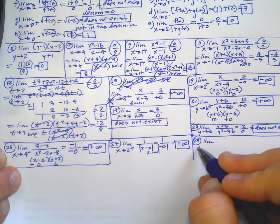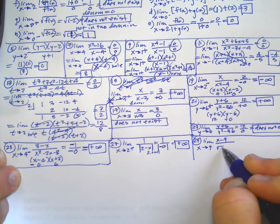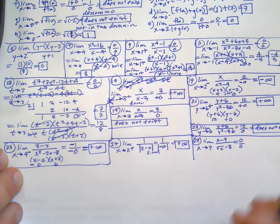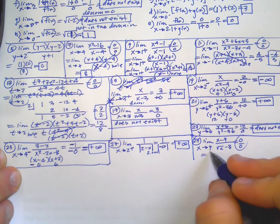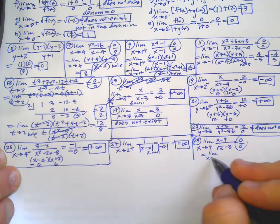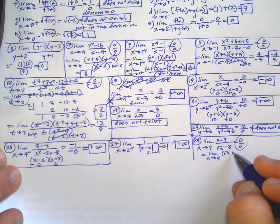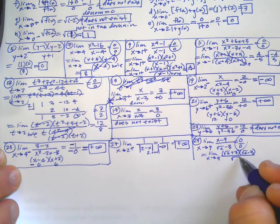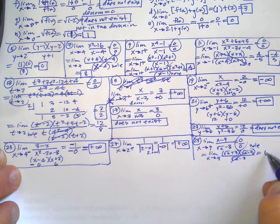Number 29: limit as X approaches 9 of (X minus 9) over (square root of X minus 3) is going to be 0 over 0. So this is potentially a hole issue. We want to factor it — and we did one like this in class. Square root of X plus 3 times square root of X minus 3 could be a difference of squares. There's the hole — plug 9 in: square root of 9 is 3, plus 3 is 6.